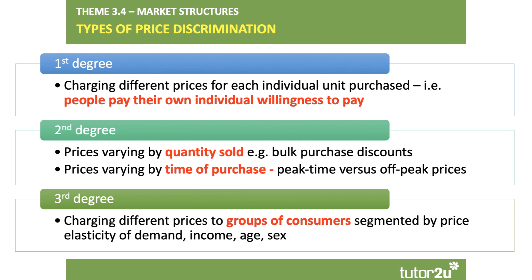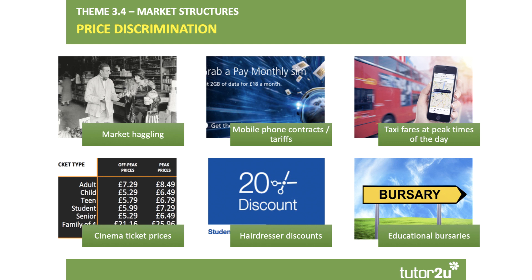The most common form of price discrimination is third degree - that's where you charge different prices for the same product to different groups of consumers, and you segment the market. You break up the market according to the coefficient of elasticity of demand, according to differences in income, age, sex, or some other metric. You tend to charge a higher price to consumers with an inelastic demand and a lower price for consumers who are price sensitive. There is a very strong link between price discrimination and businesses looking to grow their revenues and potentially their profits. Examples in markets range from haggling to phone tariffs, surge pricing in taxi companies, cinemas, and hairdressers.